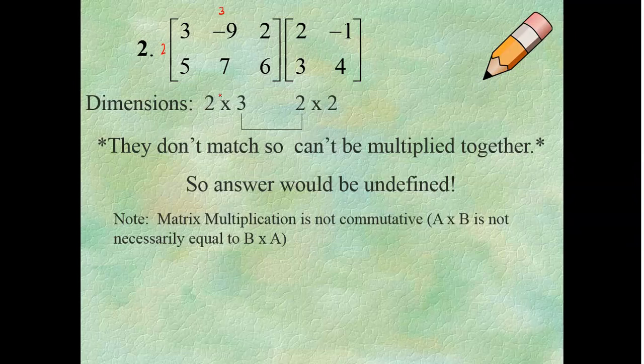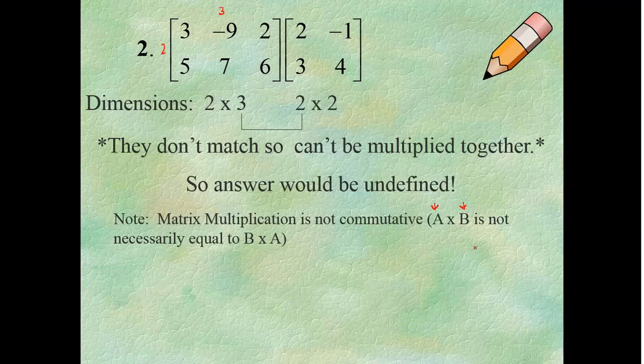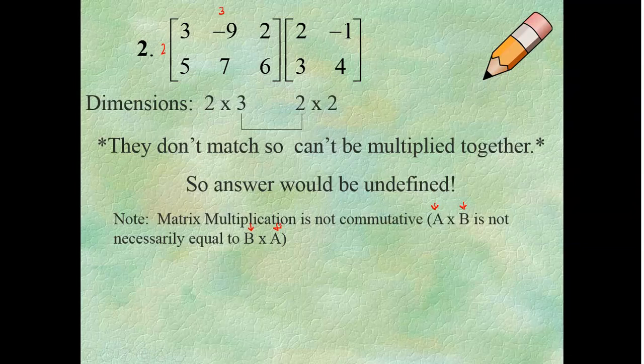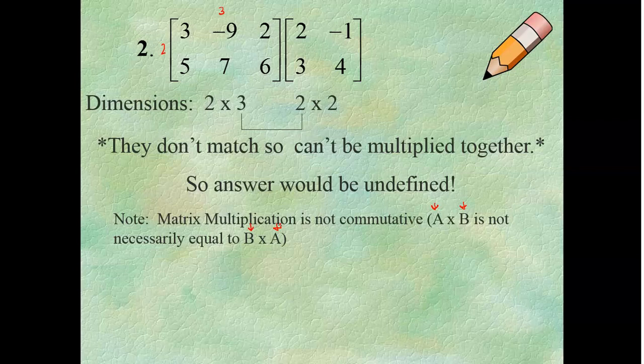Notice, this isn't commutative. Matrix multiplication is not commutative. If I have a matrix named A and a matrix named B and multiply those, not necessarily will B times A be equal. It might not even work, just like this didn't work. So, make sure you always are careful of who you're multiplying by who, especially if we start naming matrices.